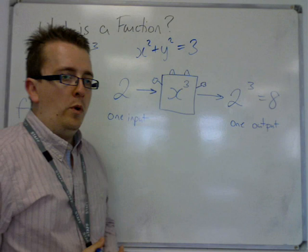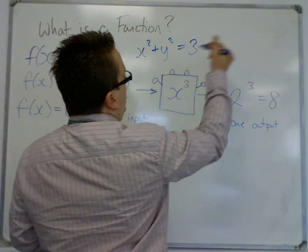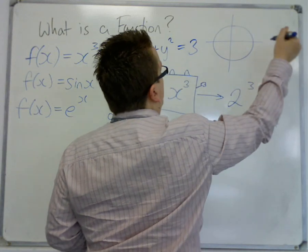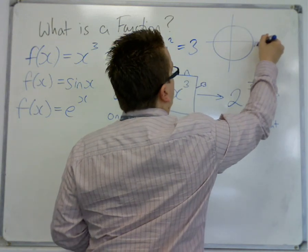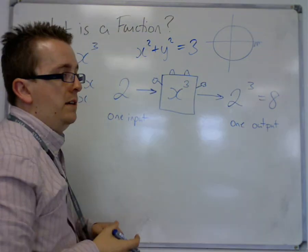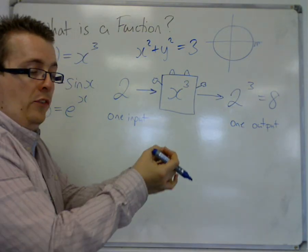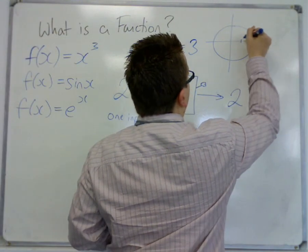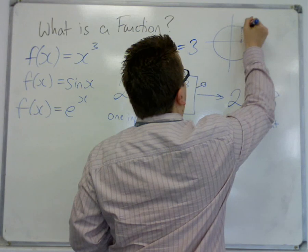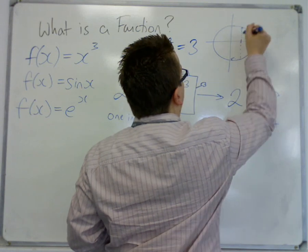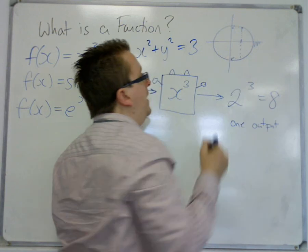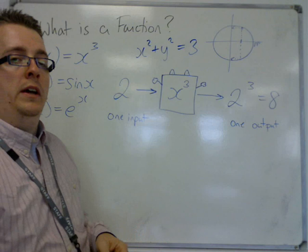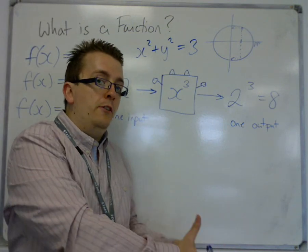Now, the problem with x squared plus y squared equals 3 is that this is a circle, centered at the origin, with radius root 3. Now, if I put in my x is 1, for example, here is x is 1, then what I get out are actually two possible values for y. So I've actually got two outputs. So for a single input, I've got two outputs, and this means that it's not considered to be a function.